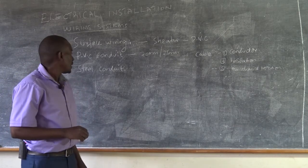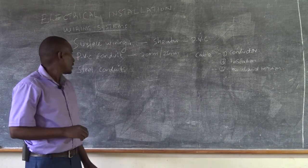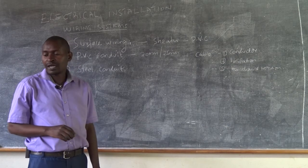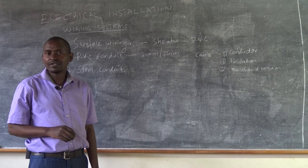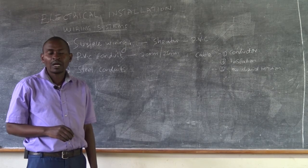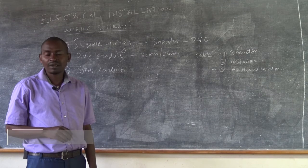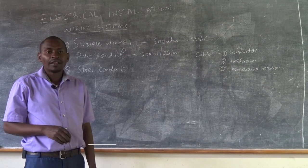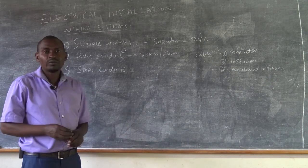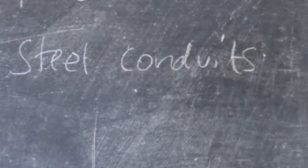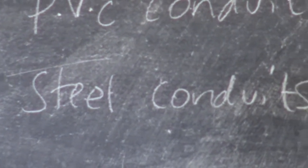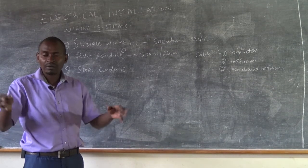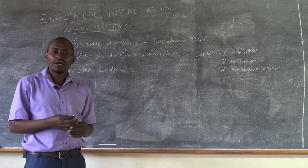Steel conduits offer better mechanical protection. And other than that, they are also impervious to chemical action because the steel conduit that is used is a galvanized type, which means that it does not react that much with the atmosphere. This is very much applicable in industries where there is a lot of movement of material and human, especially in flow shops whereby you have a big room and there are machines that are installed.